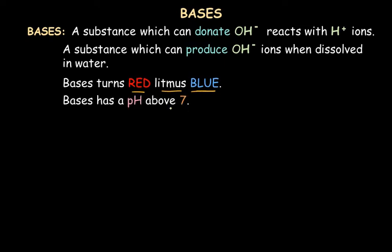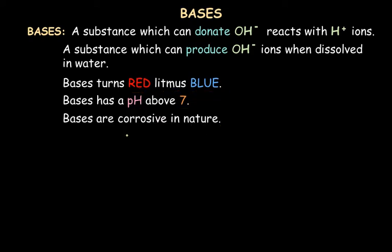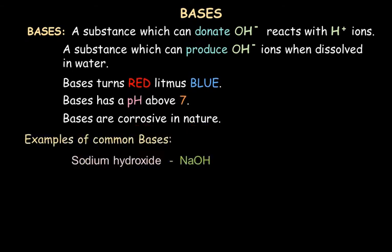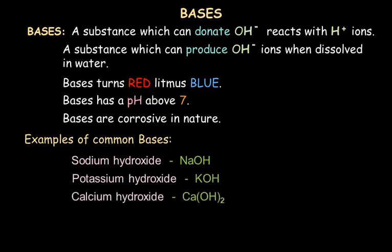We can also describe bases as substances which have a pH above 7, that is pH between 7 to 14. Just like acids, the bases are also corrosive in nature, so they can harm any surfaces that come in contact with bases, like metal surfaces, stone material, or any other surfaces. Some common examples of bases are sodium hydroxide NaOH, potassium hydroxide KOH, calcium hydroxide Ca(OH)₂, and ammonia NH₃.